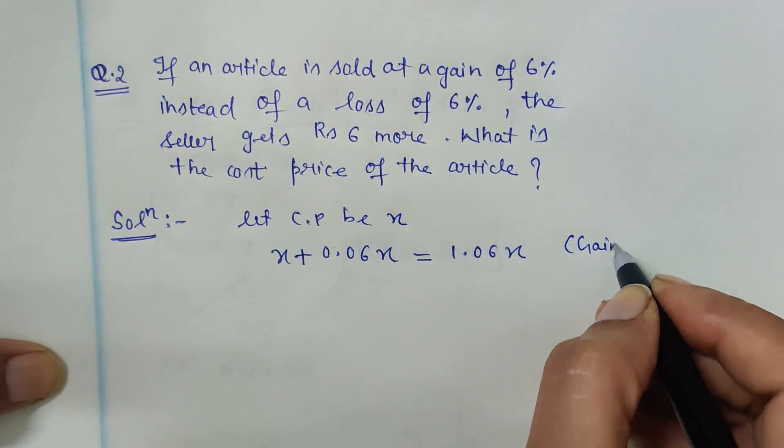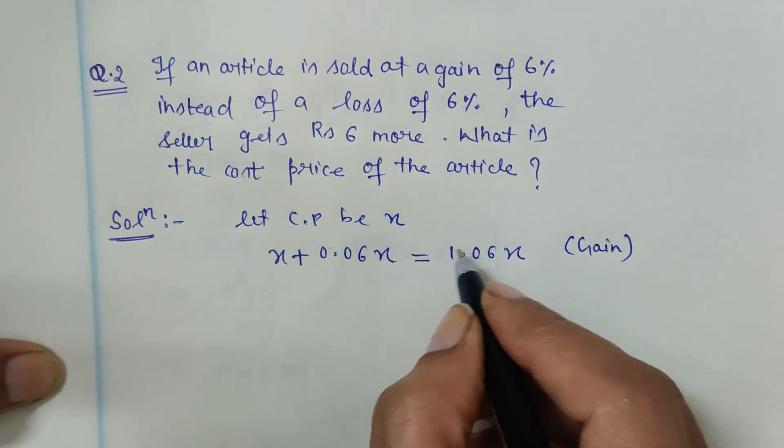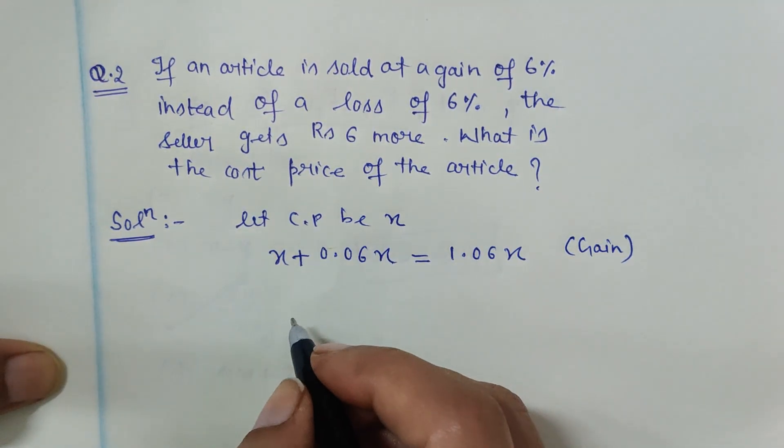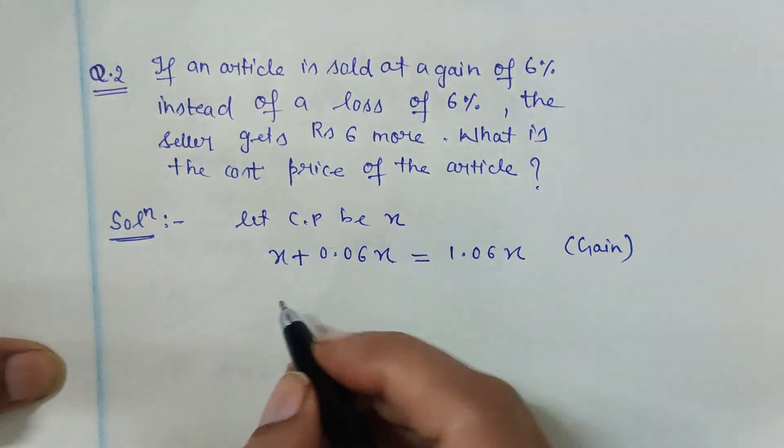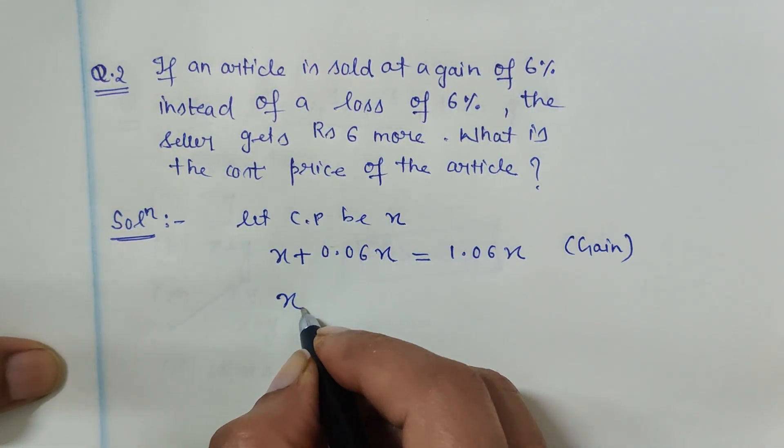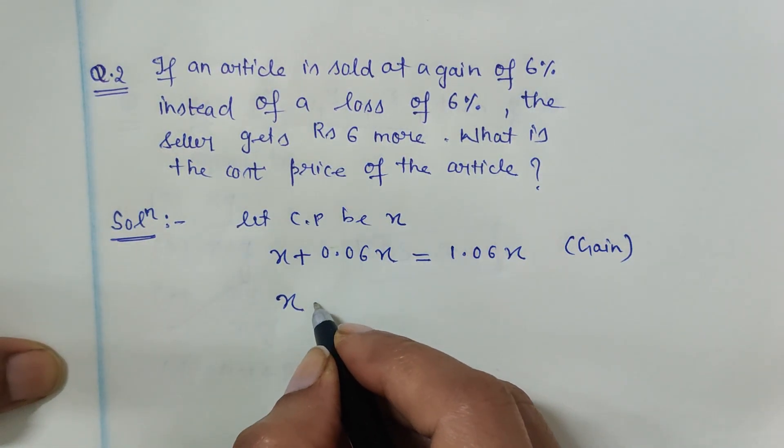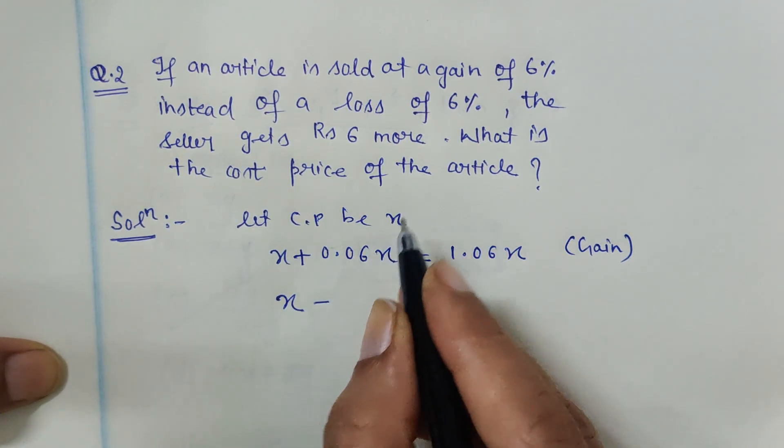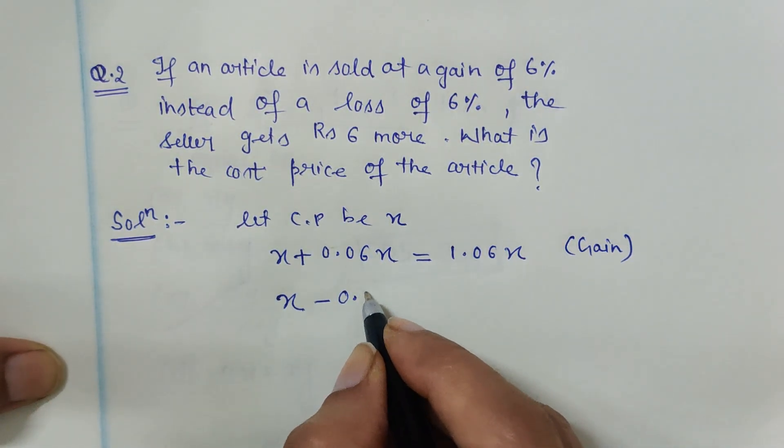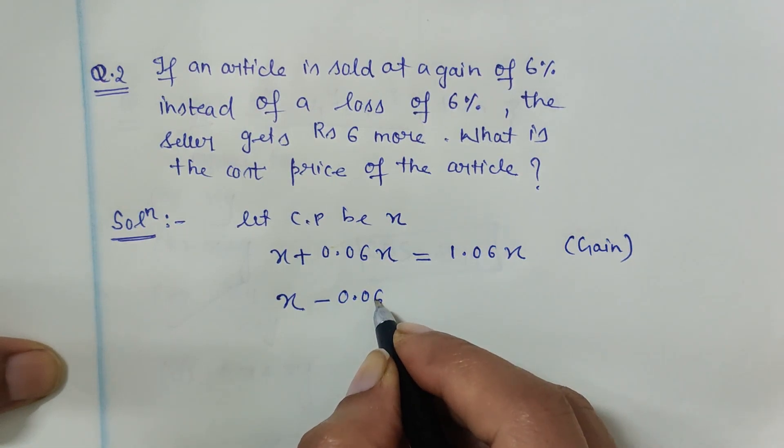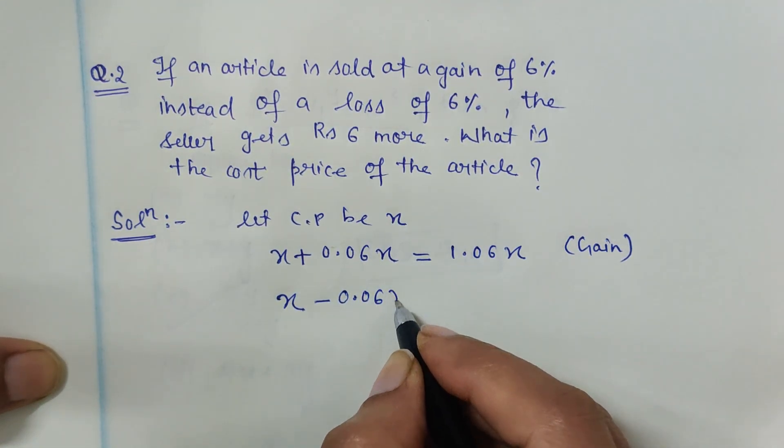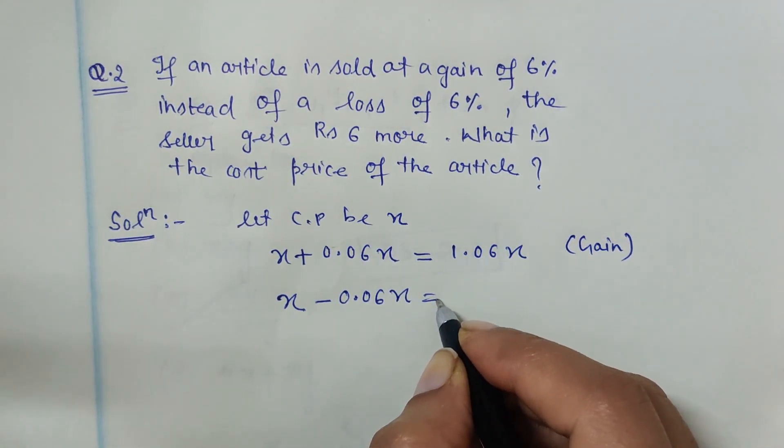And if there's a loss of 6%, what does it mean? Whatever the cost price was, from that we have to subtract 6% loss. So 6% means 0.06, 6 upon 100 is 0.06 of X.